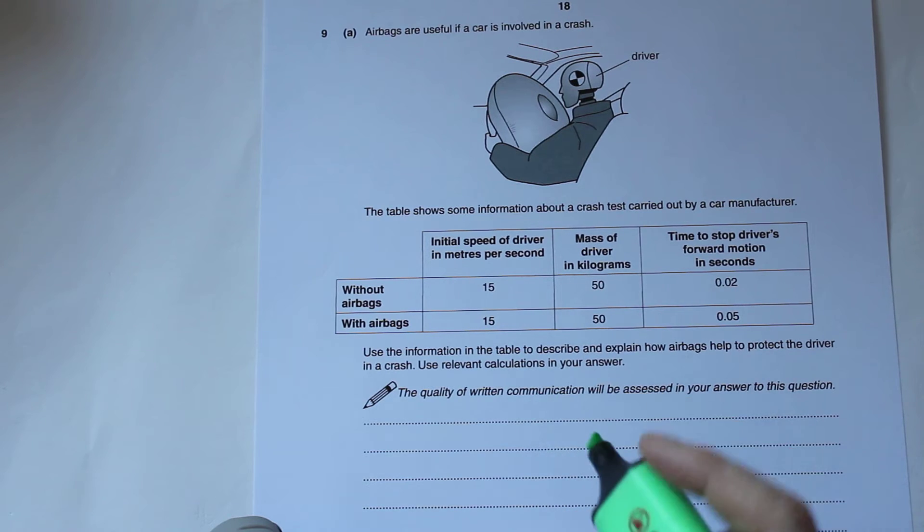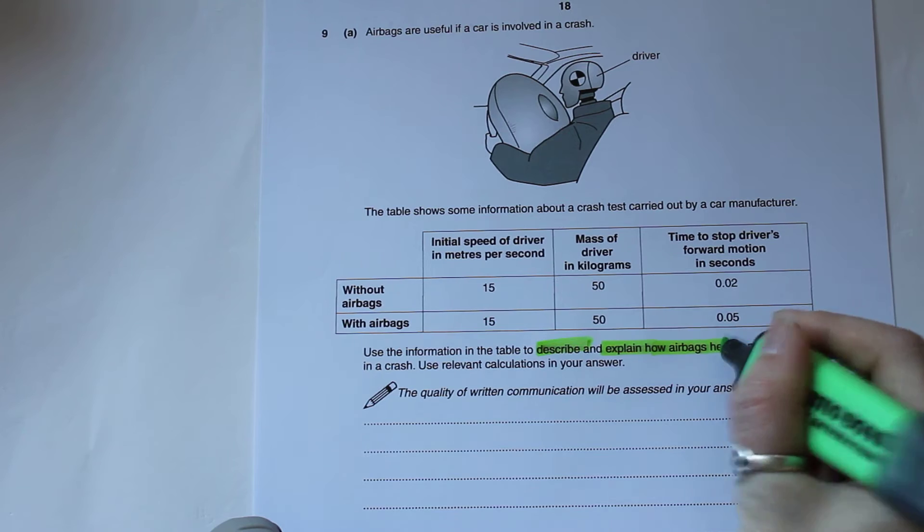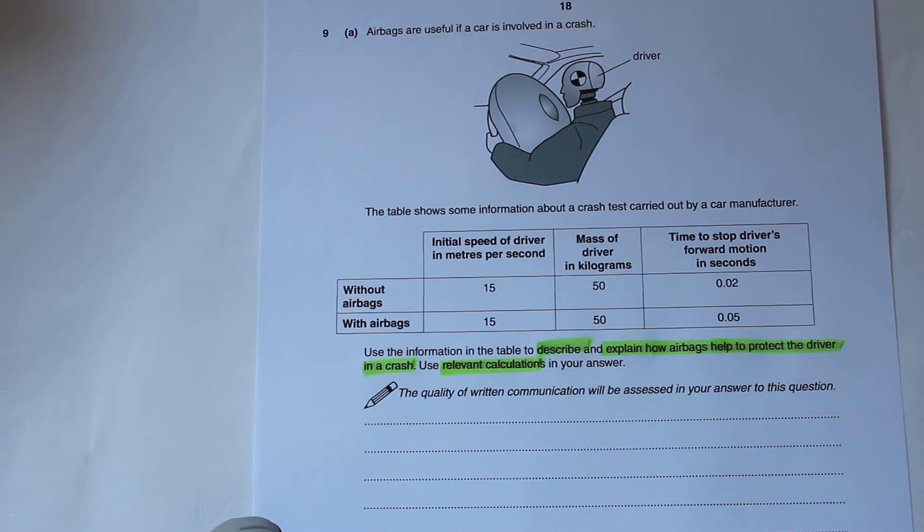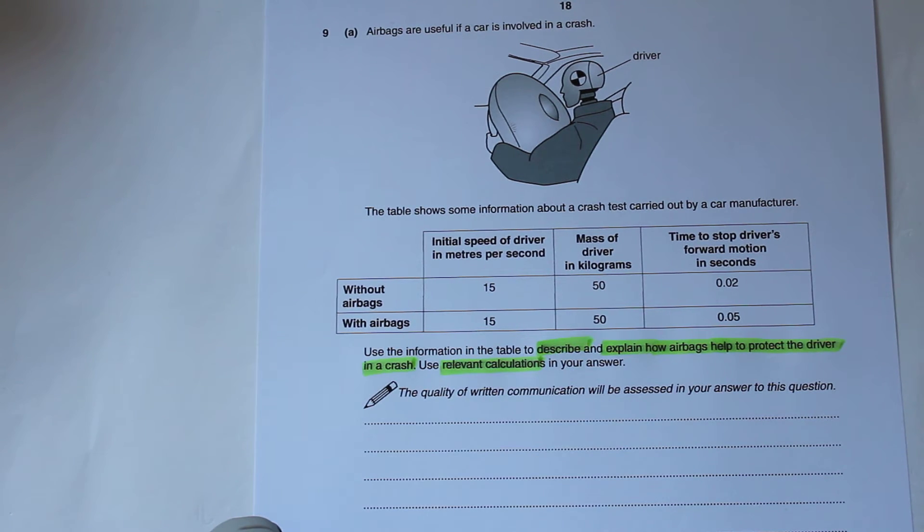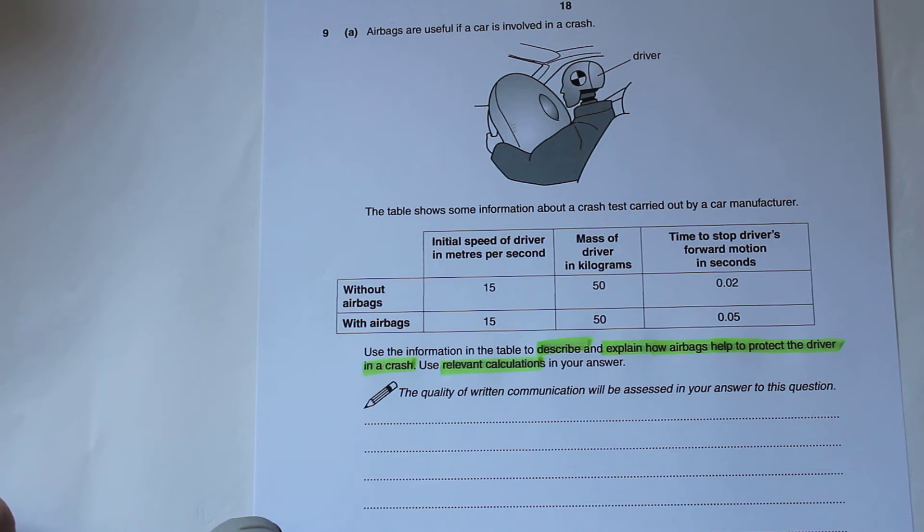Use the information in the table to describe and explain how airbags help to protect the driver in a crash. It tells us to use relevant calculations in our answer. The first thing to note is we need to use calculations. If you want to access the top marks where it tells you to use a calculation, you have to do it. If you don't use calculations, you're never going to get the top marks.